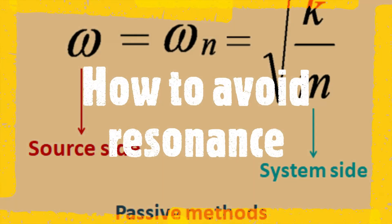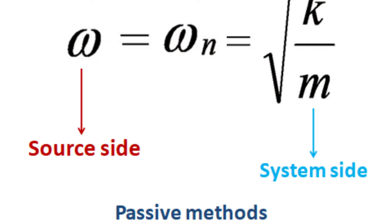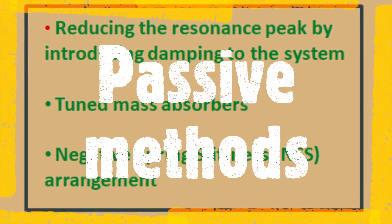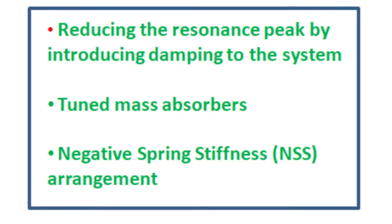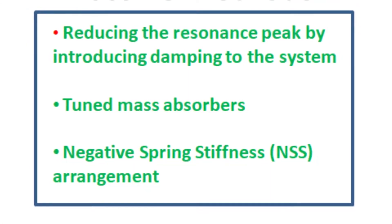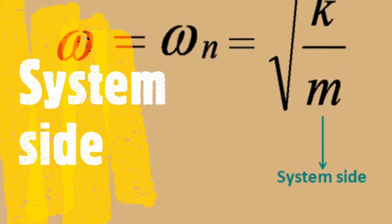In order to avoid resonance conditions, one can work on the source or excitation side, or on the system side, based on the possibilities of changes available. If both changes are not possible, one has to go for passive techniques like application of damping, tuned mass absorbers, or negative spring stiffness techniques. From the equation of natural frequency, one can increase the natural frequency either by increasing the stiffness or decreasing the mass of the system.